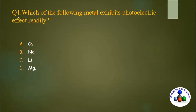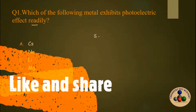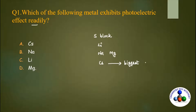Let's solve the first question: which of the following metals exhibits the photoelectric effect most readily? The options are cesium, sodium, lithium, and magnesium — all s-block elements. Placing them in relative position: lithium, then sodium, then cesium, with magnesium next to sodium. Cesium is the biggest, so its ionization energy is least, meaning removal of an electron from cesium is easiest. Option A is the correct answer.